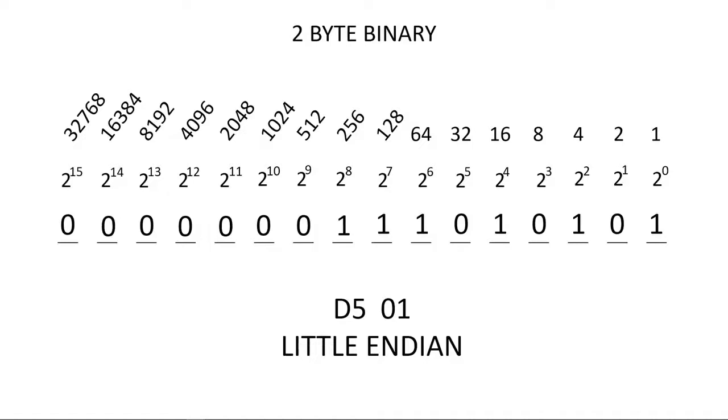So why would we do that? Well, simply to make computer calculations more efficient. Why calculate all the zeros on the left, as you see here, first? If we flip Endianness, we can ignore them all, and never have to calculate past the one.